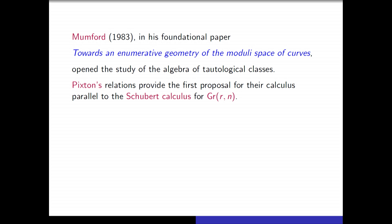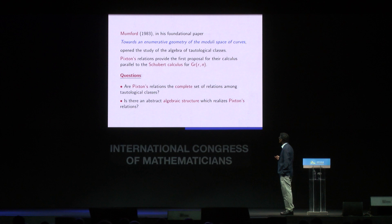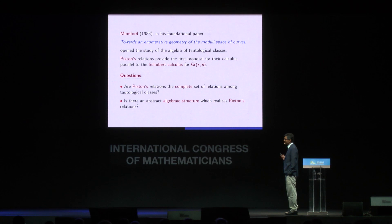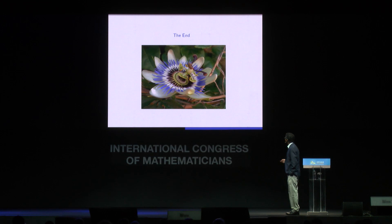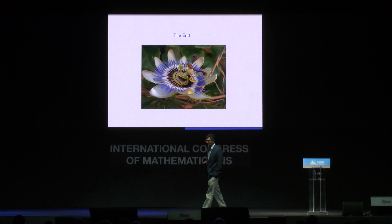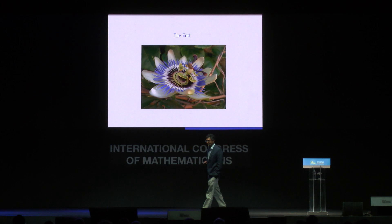With Pixton's relations we find the first proposal for a full calculus of tautological classes, parallel to the Schubert calculus for the Grassmannian. There remain important open questions: Are these relations the complete set? No one has ever found a relation outside this set. Is there an abstract algebraic structure that realizes exactly this set of relations? The mathematicians in the photos have been getting younger and younger through the talk, so there is room for new contributions. The passion flower photo was taken by a former student, Christo. Thank you.